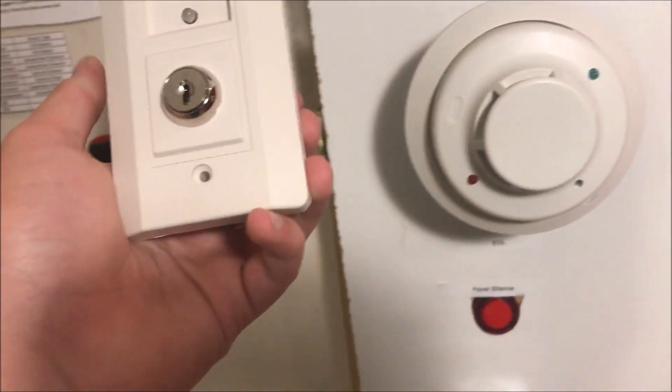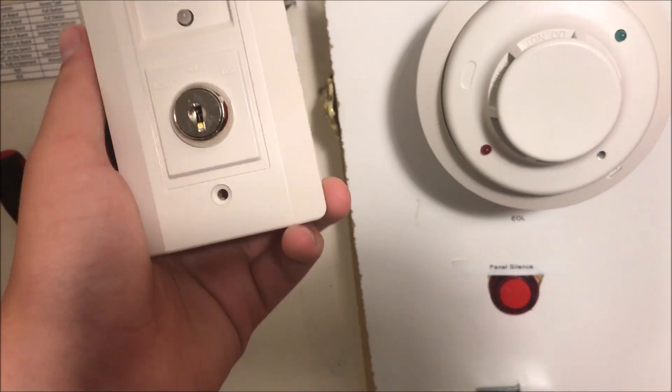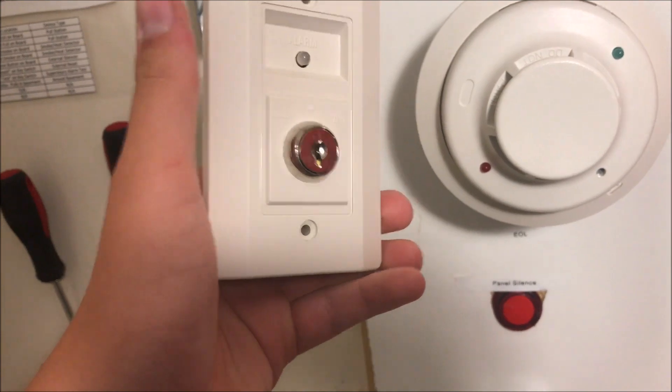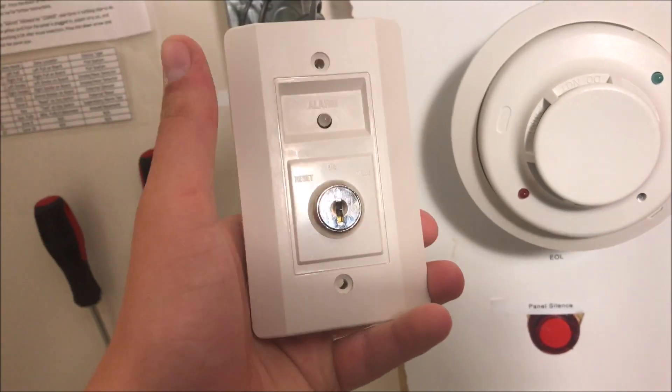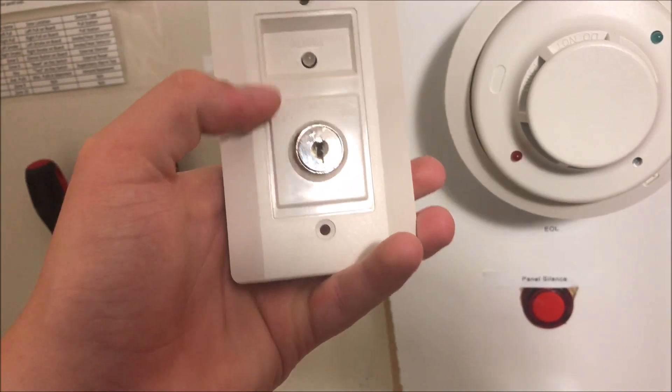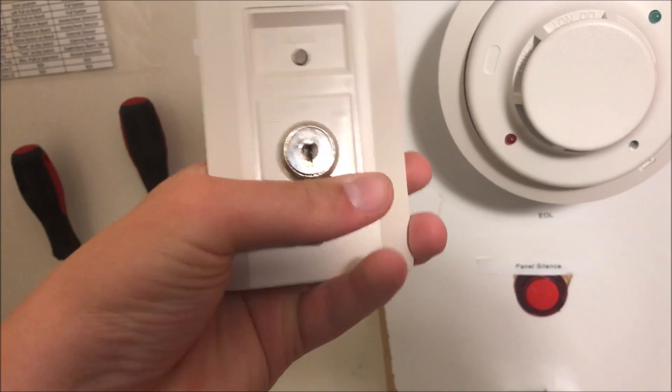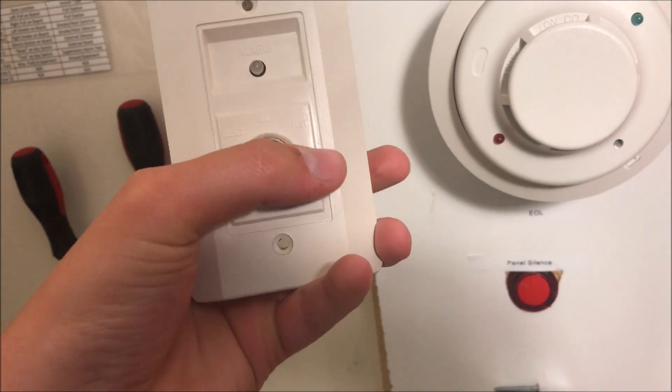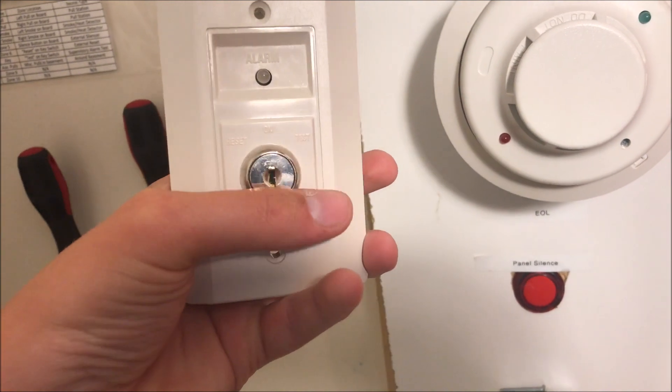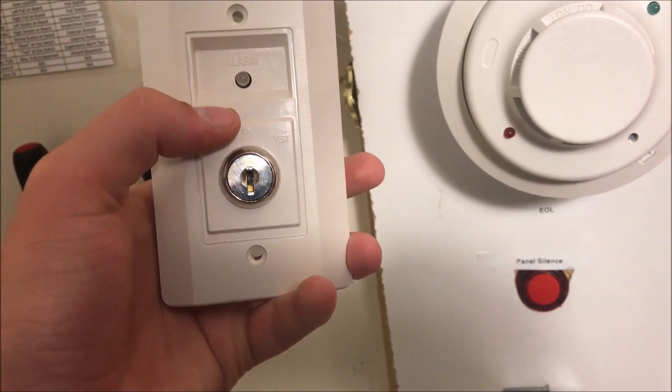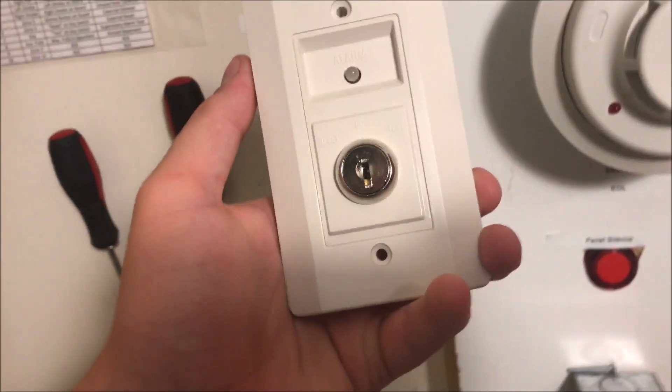First off, this is the switch itself. You've seen it before. It's a basic red and green LED key switch that goes momentary to reset, and then locking over to test. To get the key out, you have to turn it back to on. That's really the front of it, not much else.